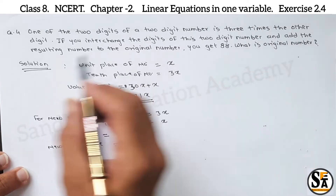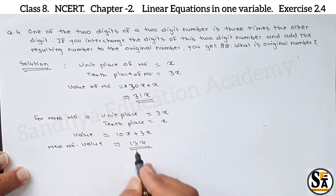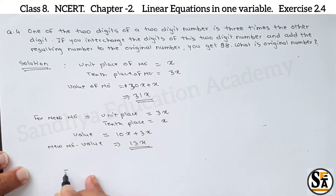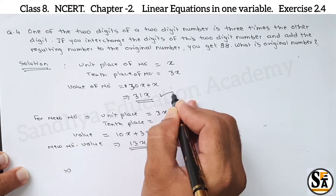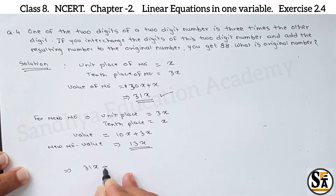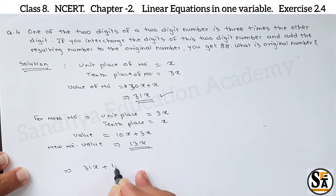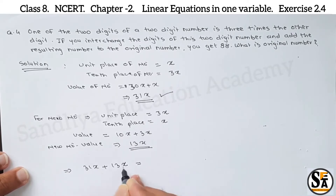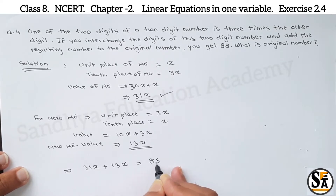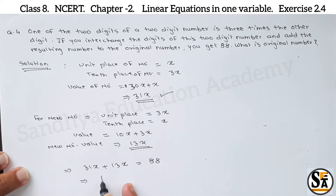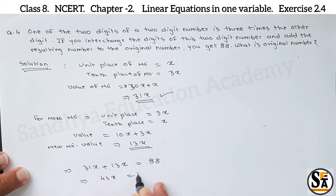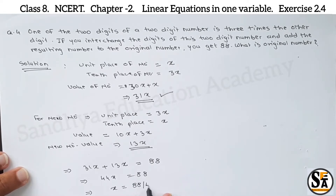The condition is given: add the resulting number to the original number. First number is 31x plus new number 13x. So if we add, result is 88. Solving: 31 plus 13 is 44x equals 88, and we get x equals 88 divided by 44. So value of x equals 2.